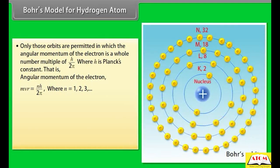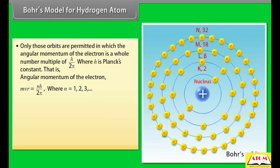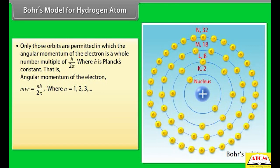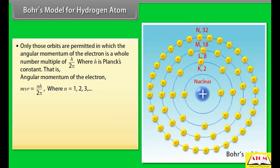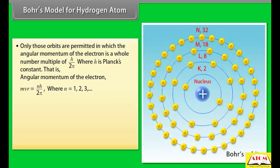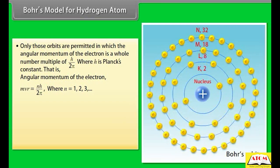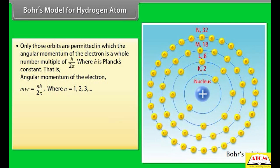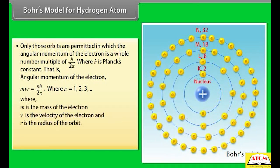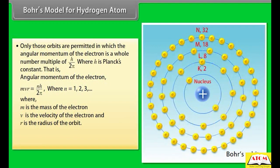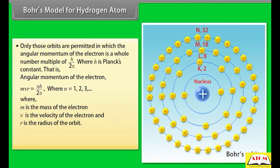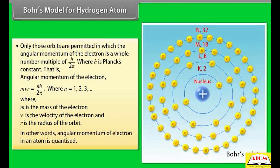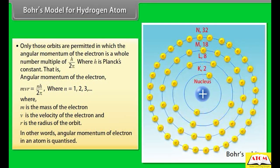Only those orbits are permitted in which the angular momentum of the electron is a whole number multiple of h/2π, where h is Planck's constant. That is, angular momentum mvr = nh/2π, where n = 1, 2, 3 etc., m is the mass of the electron, v is the velocity, and r is the radius of the orbit. In other words, the angular momentum of an electron in an atom is quantized.